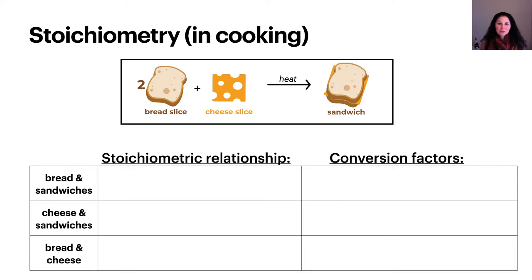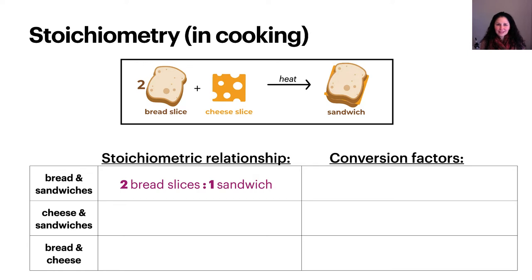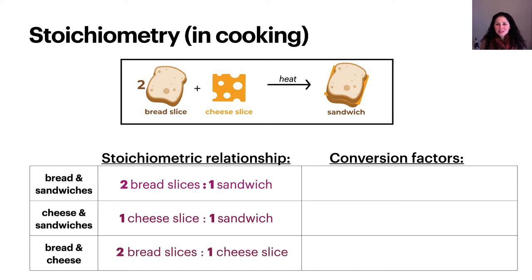For example, the relationship between bread and sandwich is two slices of bread to one sandwich. Now you try. Please write down the stoichiometric relationships between cheese slices and sandwiches, and also for bread and cheese slices. The relationship between cheese and sandwich is one cheese slice to one sandwich. We determine this from the balanced equation, where the coefficient for both cheese slice and sandwich is one — remember that we don't usually write the coefficient one, but it is implied. The relationship between bread and cheese is two bread slices to one cheese slice, determined from the balanced equation where the coefficient for bread is two and that for cheese is one.